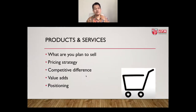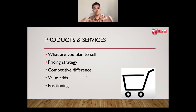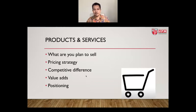You may also include products and services — list down what you plan to sell, the pricing strategy, competitive difference, value adds, and positioning. You don't put the details of every product; you may group them, or if you have only one product just mention it and how it was developed. In terms of the NABC — the needs, the approach, the benefit, and competitive analysis — you may want to provide a snapshot of that information inside the company profile.